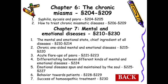Then differentiating between different kinds of mental and emotional diseases. Then emotional diseases spun and maintained by the soul — description in aphorisms 225 to 227. Then behaviour towards the patient — psychotherapy, how deception and disguise etc. are to be used for handling these cases. Finally the success of homeopathic treatment: Hahnemann says in aphorism 230 it is best judged by the treatment of mental diseases. In all these, Hahnemann emphasizes the role of psora, which we saw in our first session also.